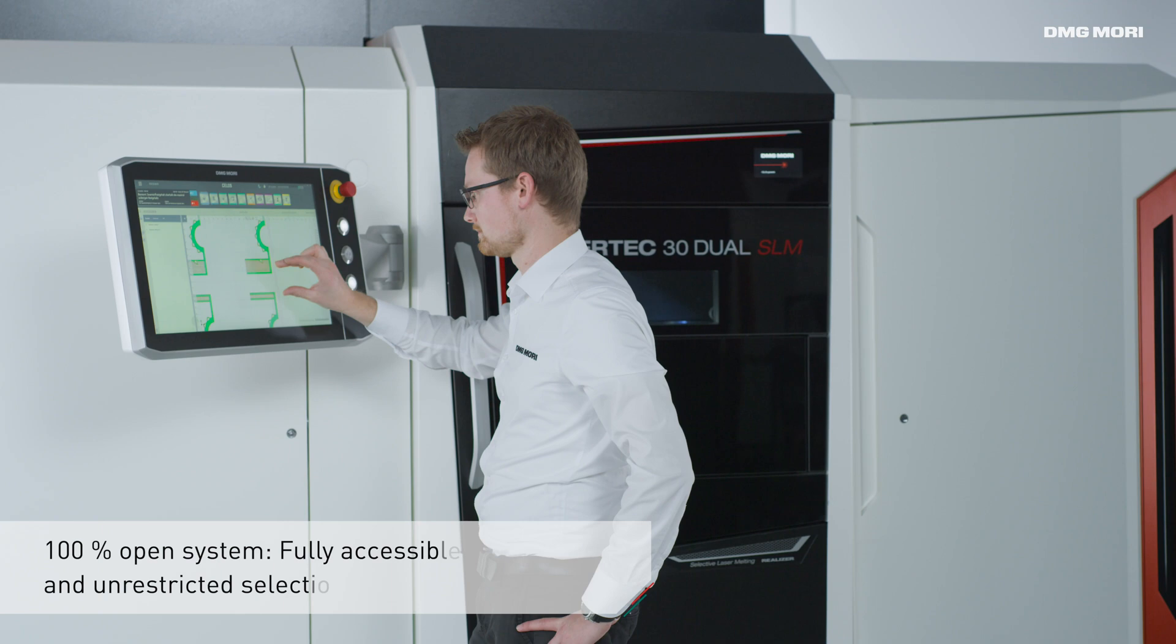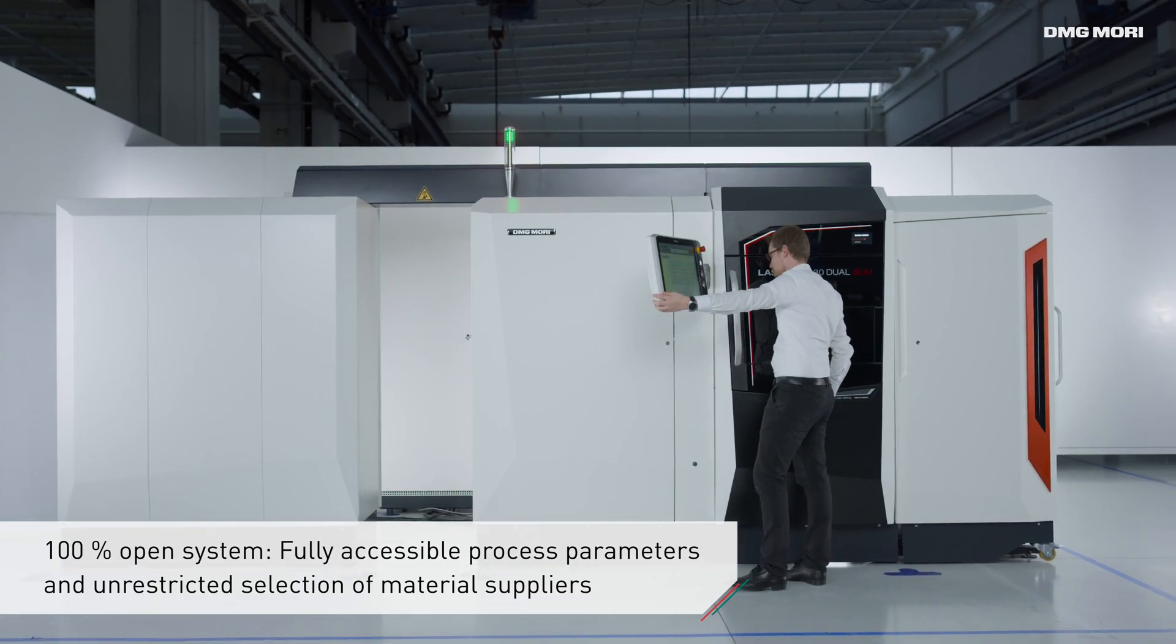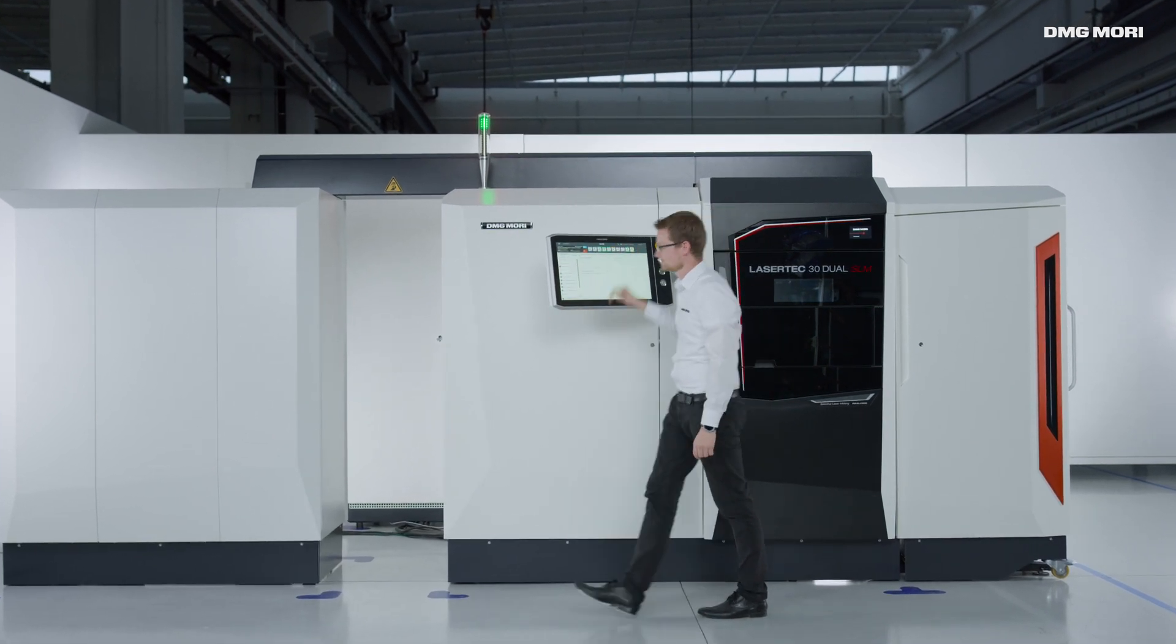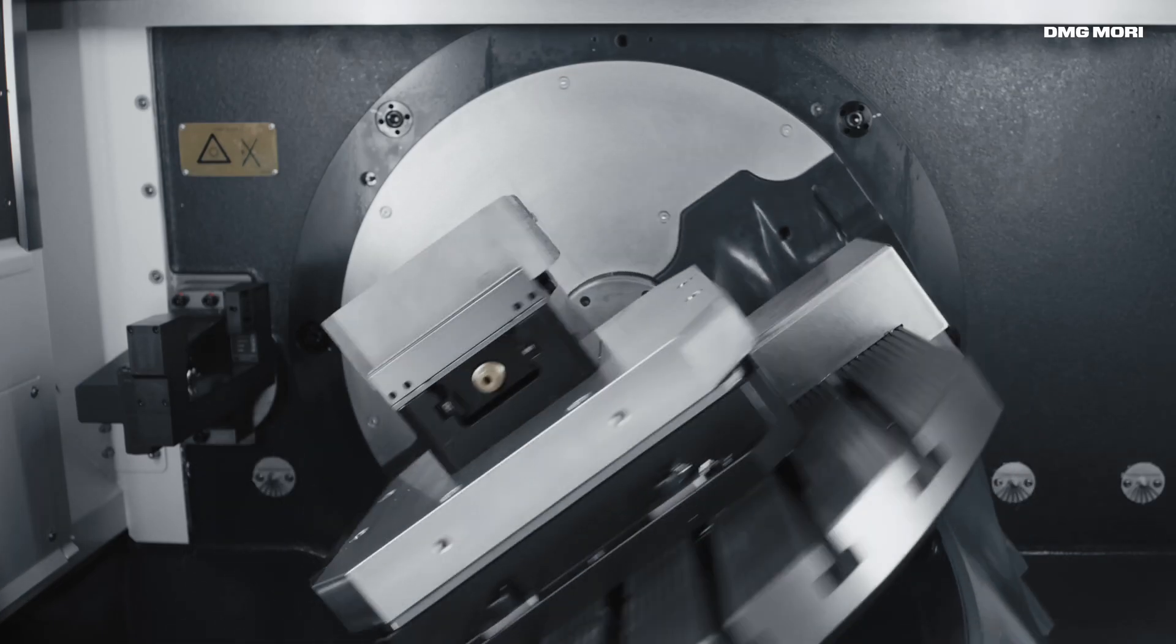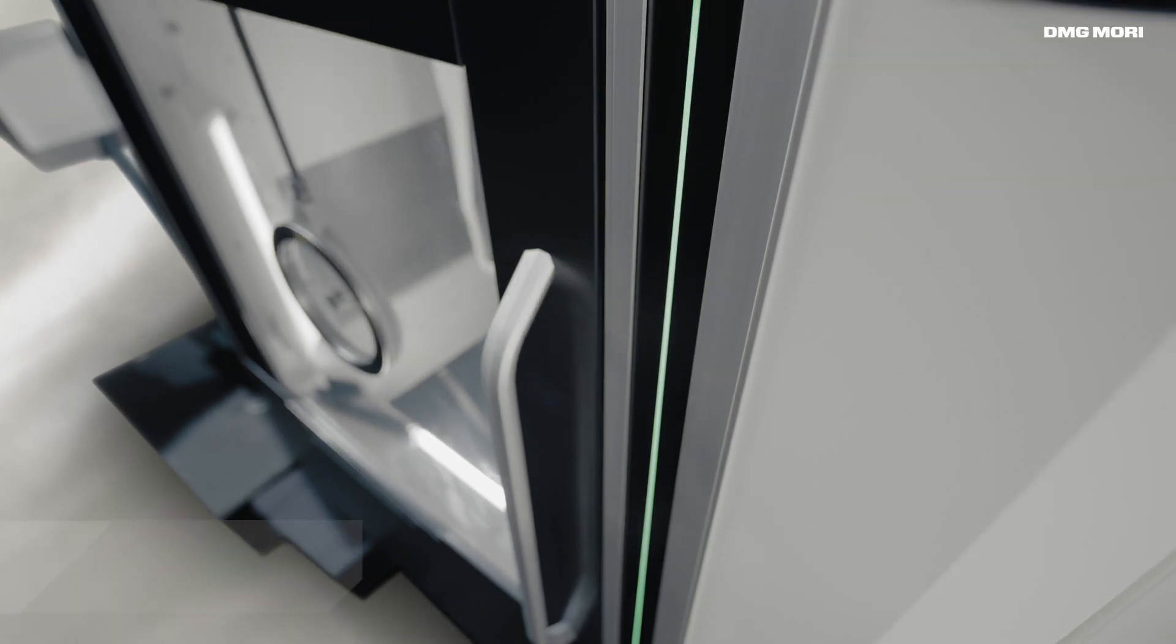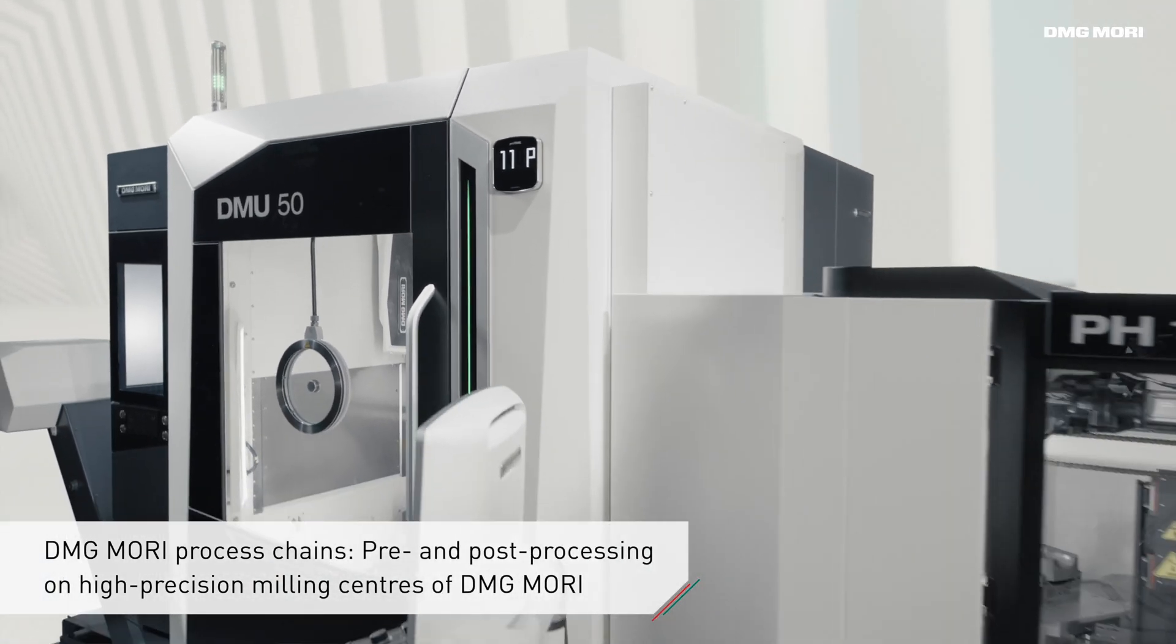This open system also makes it easy to customize all machine settings and process parameters. With the integration of a zero point clamping system and seamless data transfer in Celos, a uniform interface is ensured allowing pre and post processing on the DMU 50 third generation.